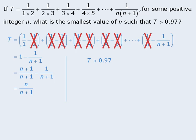Since the question asks us to find the smallest value of n such that T is greater than 0.97, we can now replace T with n over n plus 1, which means we are now looking for the smallest value of n such that n over n plus 1 is greater than 0.97.